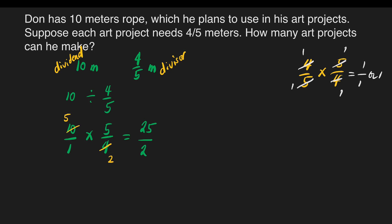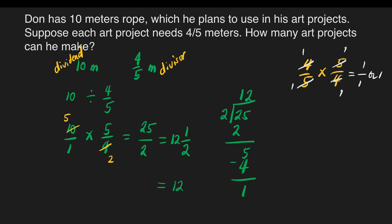We change this to a mixed number. We divide 25 by 2. How many 2's in 2? It's 1. 1 times 2 is 2, subtract — that's 0. Bring down 5. How many 2's in 5? That's 2. 2 times 2 is 4. 5 minus 4 is 1. So there are 12 and 1/2. But we are asked how many art projects, so we give a whole number. The final answer is he can make 12 art projects.